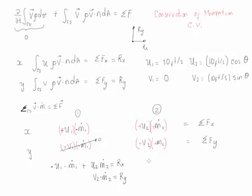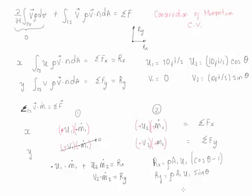Note that the problem does not provide a specific angle for the vane turn; however, we can write general formulas for the reaction forces. The reaction in the x-axis is rho times A₁ times u₁ times (cosine theta minus one), and the reaction in the y-axis is rho times A₁ times u₁ times sine theta. These are general formulas for stationary vanes where the incoming velocity is known and the turning angle theta can be substituted directly. Note that in this case gravity and friction effects are neglected.